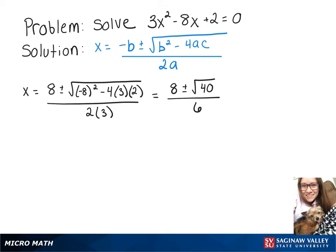Now to simplify what's in that square root, we could rewrite it as the square root of 4 times 10. So we would then be left with 8 plus or minus 2 root 10 over 6.